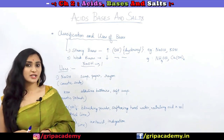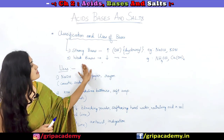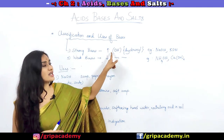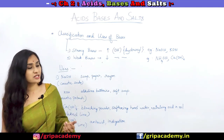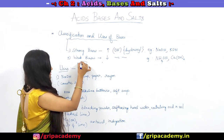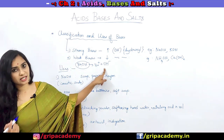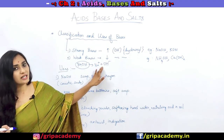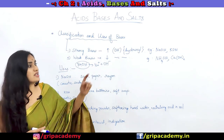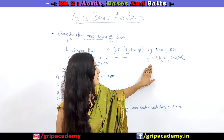Now let us understand the classification and uses of bases. We have divided bases into strong bases and weak bases. Strong bases are those which will dissociate completely into their ionic forms and produce a high percentage of hydroxyl ions when dissolved in water. For example, NaOH or KOH — sodium hydroxide and potassium hydroxide. Sodium hydroxide completely dissociates into Na+ and OH- ions. Whereas weak bases also produce OH- but do not dissociate completely into their ionic form. They end up forming a very low concentration of hydroxyl ions. Examples are ammonium hydroxide and calcium hydroxide.